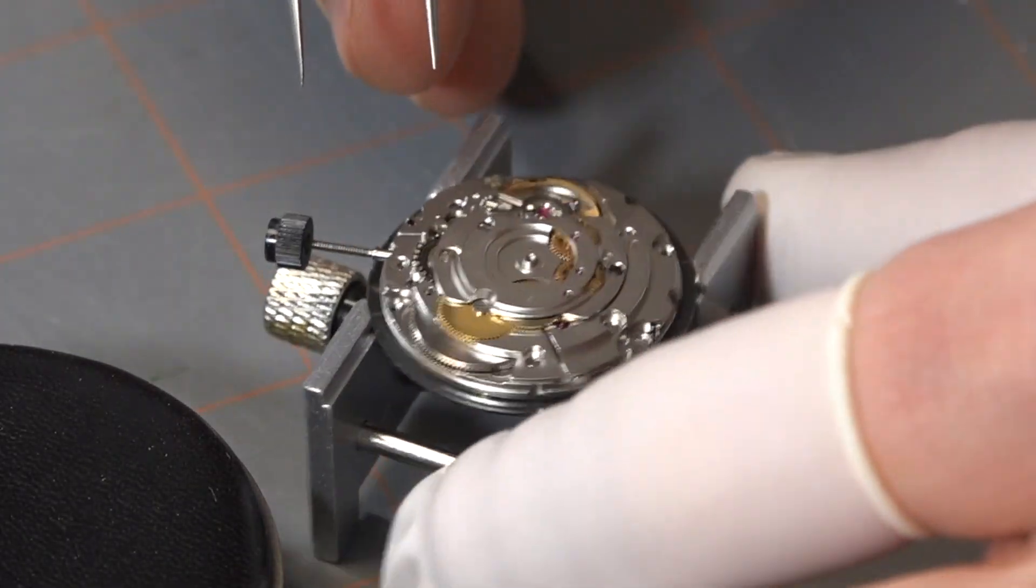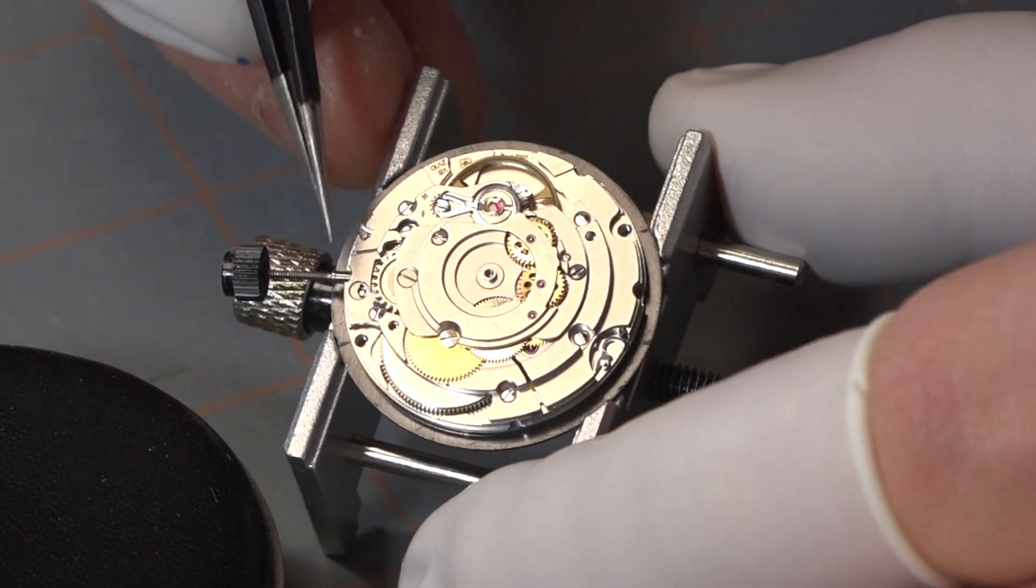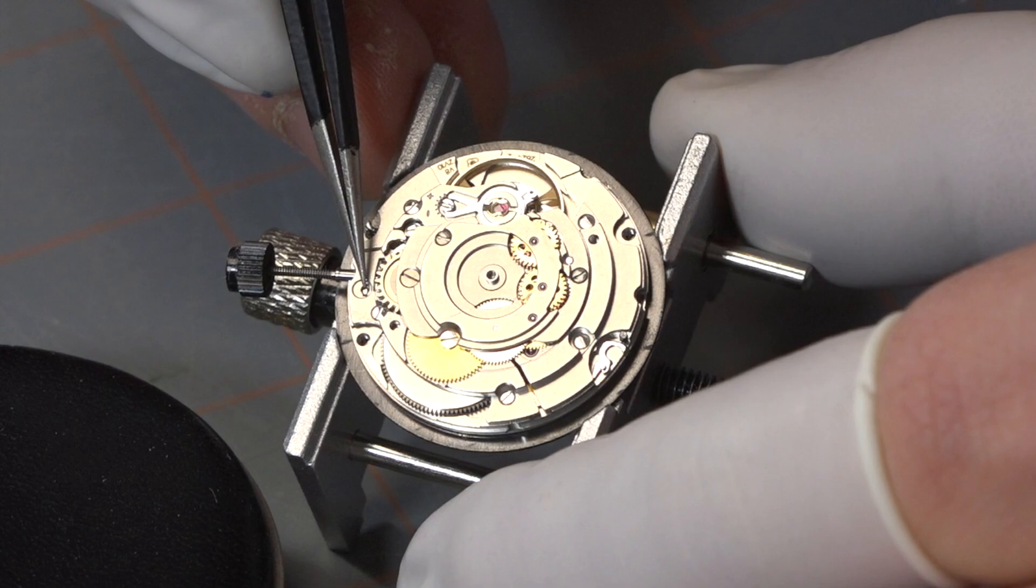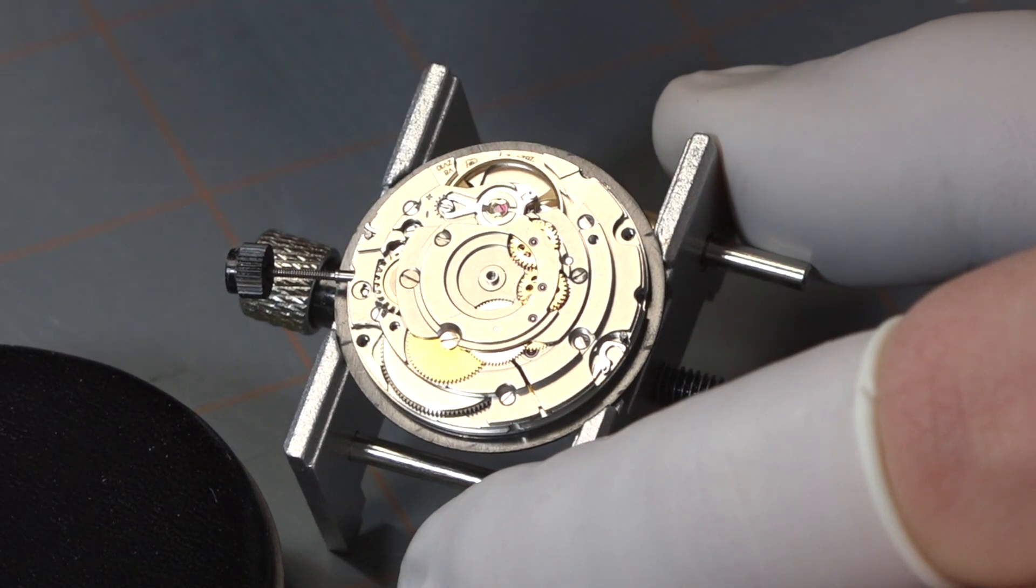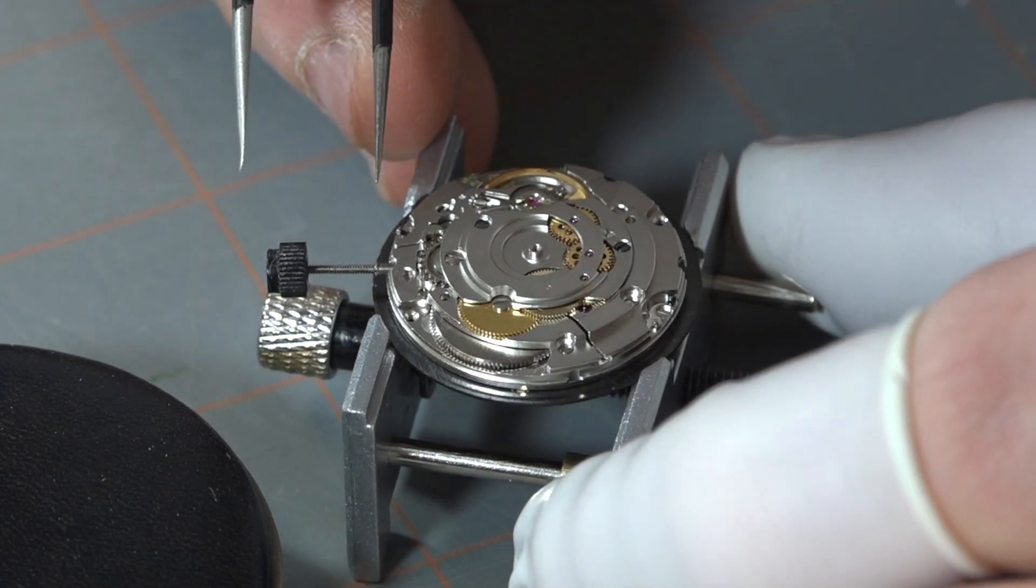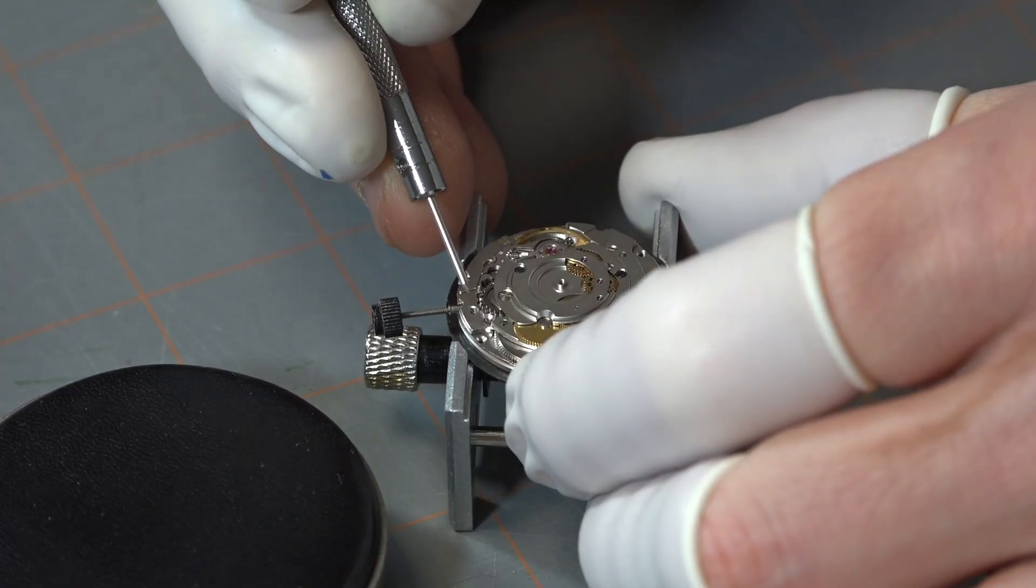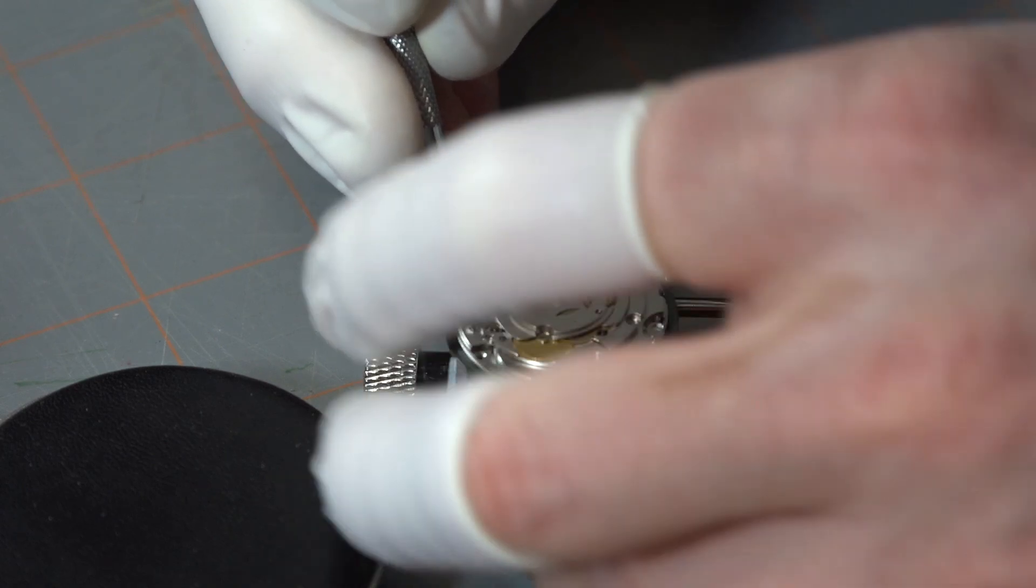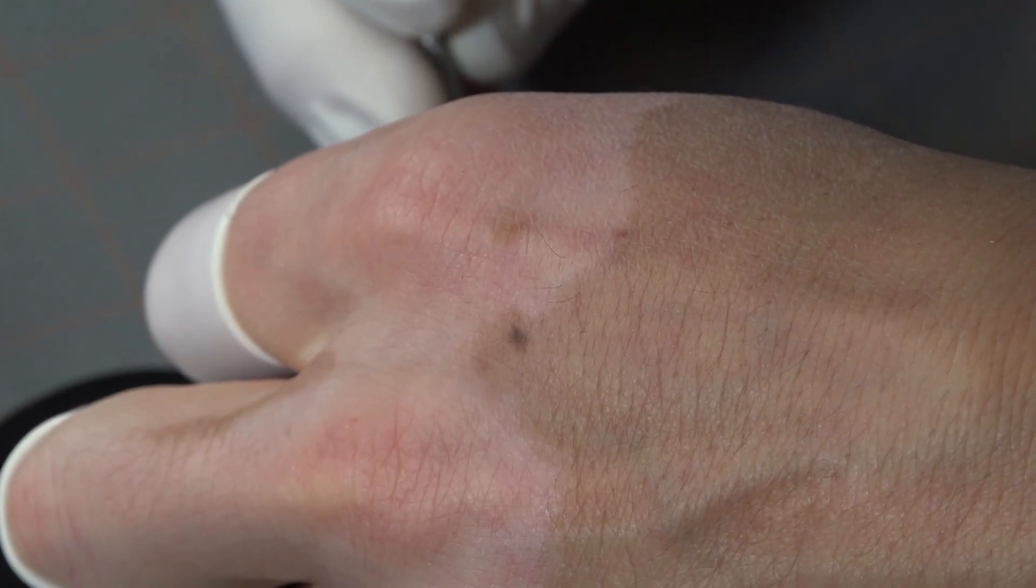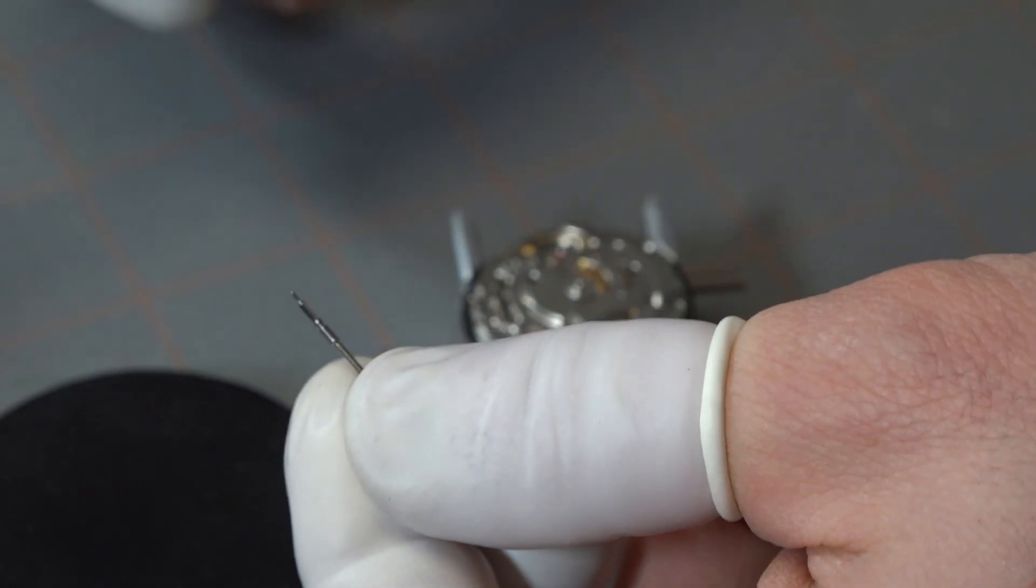The next step is to remove the crown. Make sure it is pulled all the way out. You'll notice that the balance wheel is not moving and you push where my tweezer is pointing on the ETA 2824. If you remove the crown when it's in the pushed in position, you run the risk of gears inside not aligning properly when you try to push it back in. My apologies for having my hand in the way, but it was just difficult to film. If you push that button and pull on the crown, it will come out.